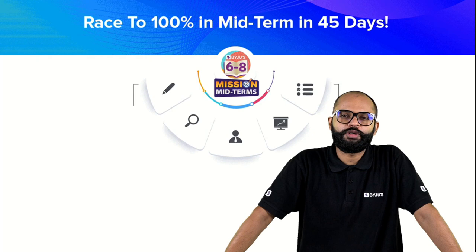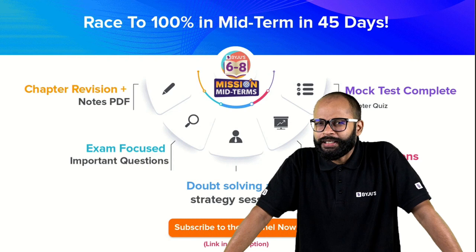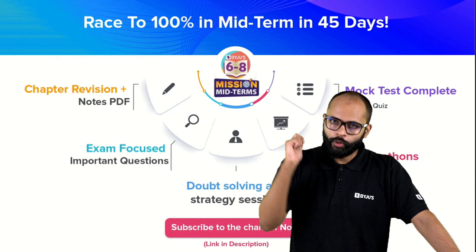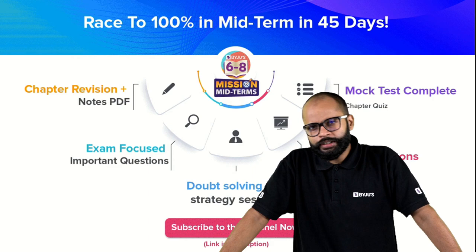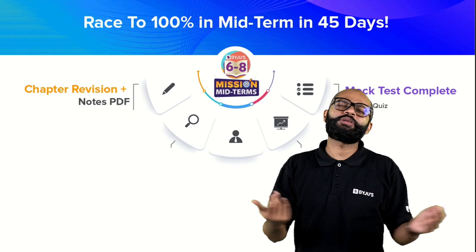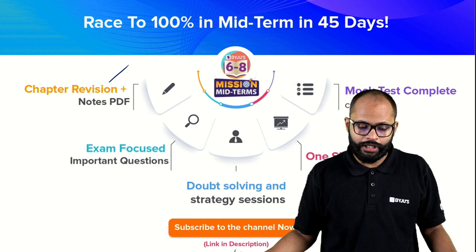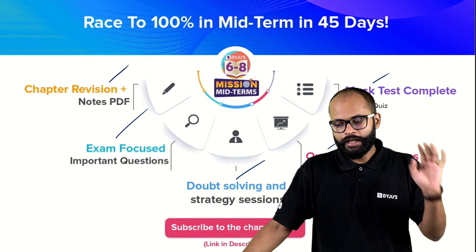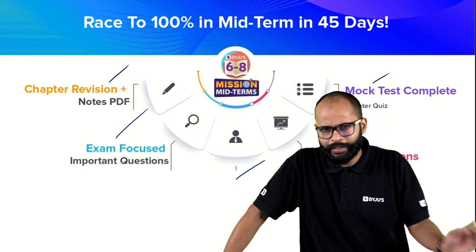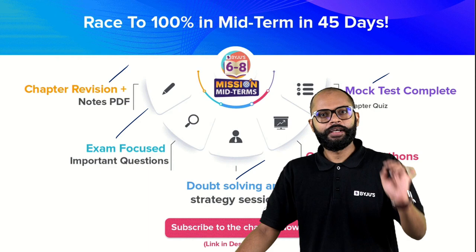We are here for Mission Midterm — the target is 100%. It may sound impractical, but if you target 100% and work hard, even if you miss you'll reach 95–96%. Set a target and work according to it. In 45 days targeting 100%, we are giving you chapter revision, notes, mock tests, one-shot sessions, focus questions, doubt solving, and strategy sessions.